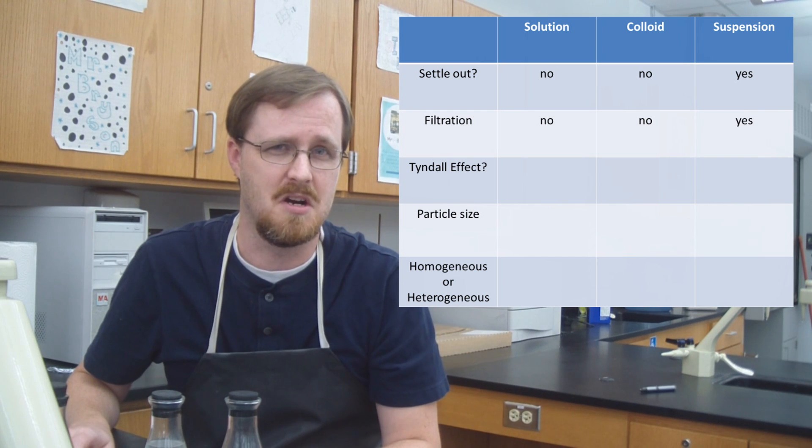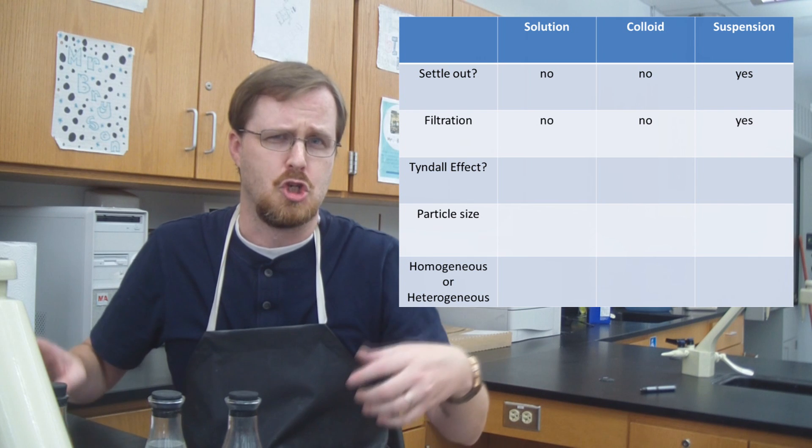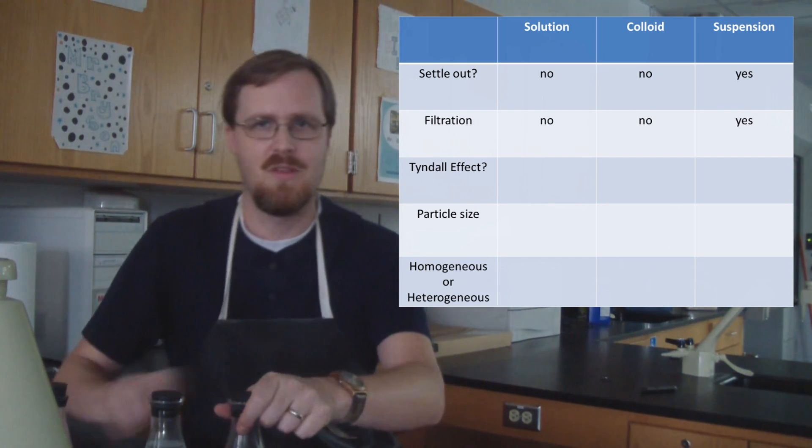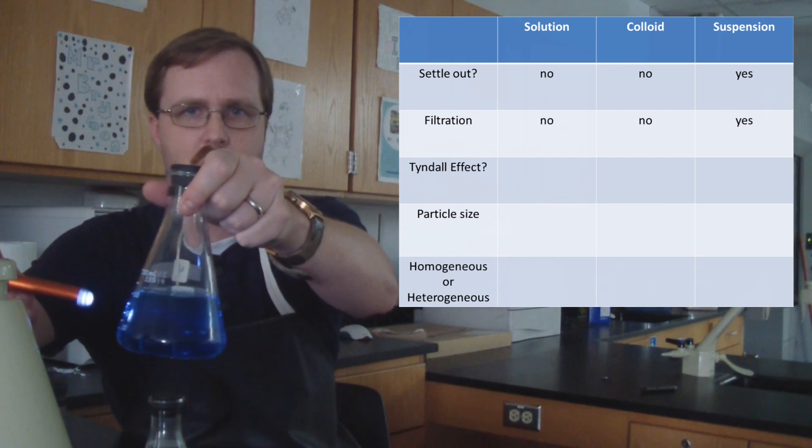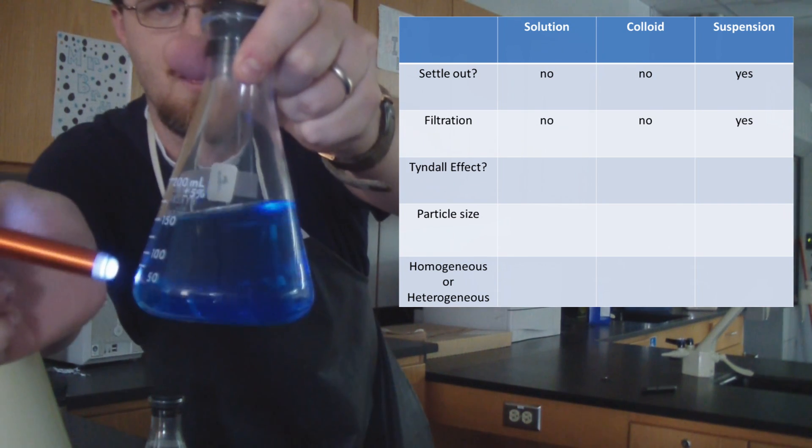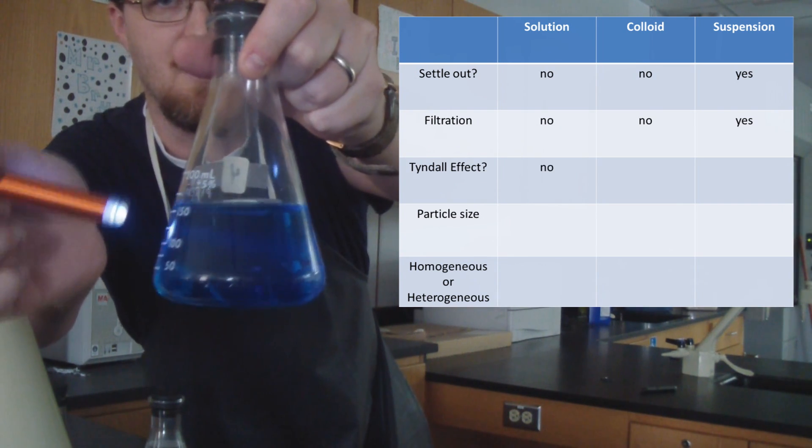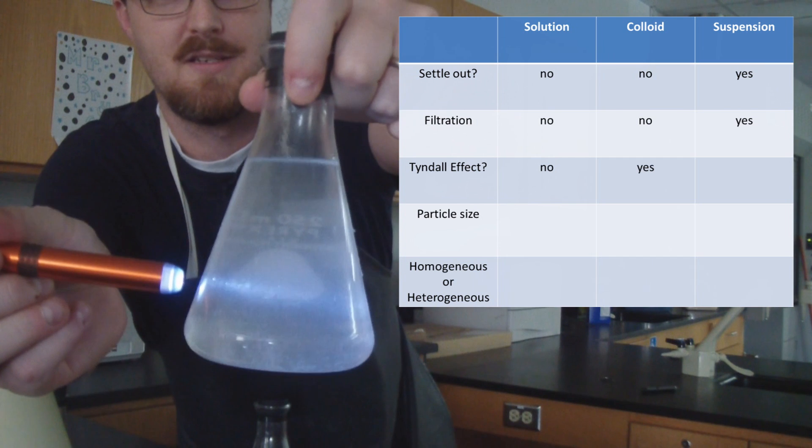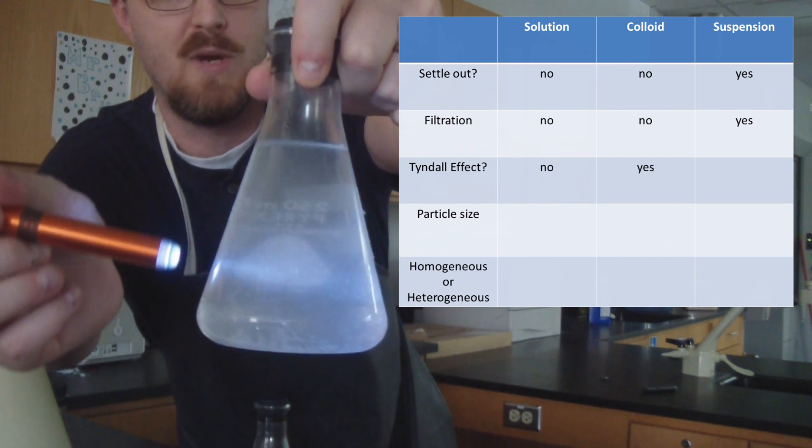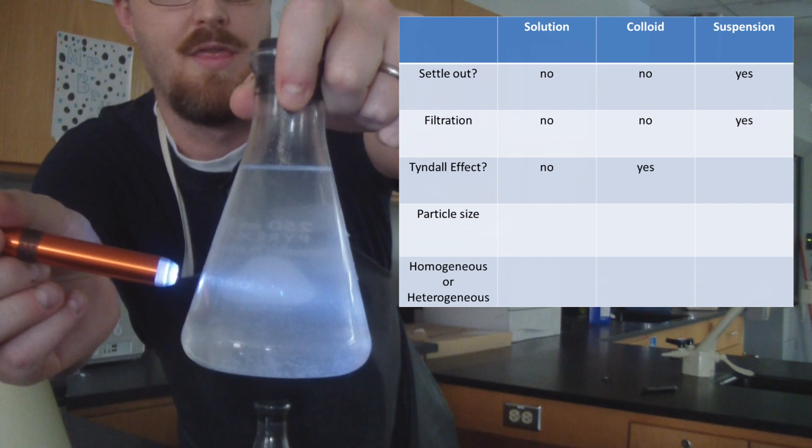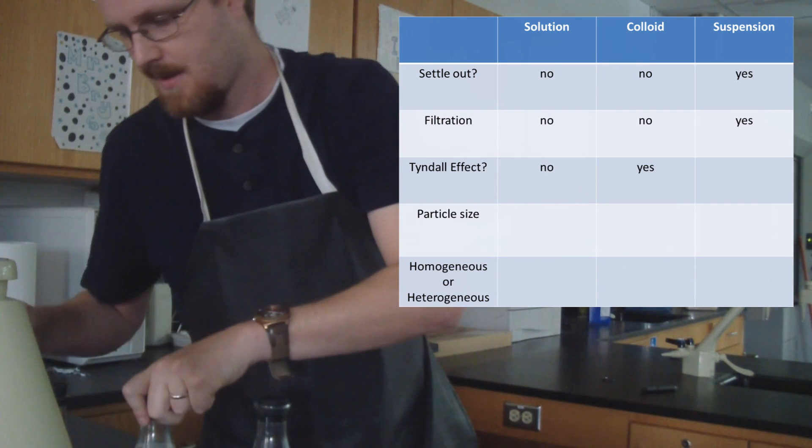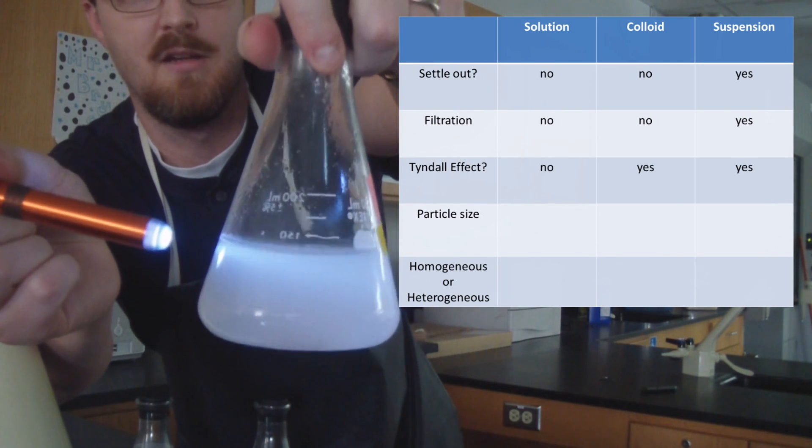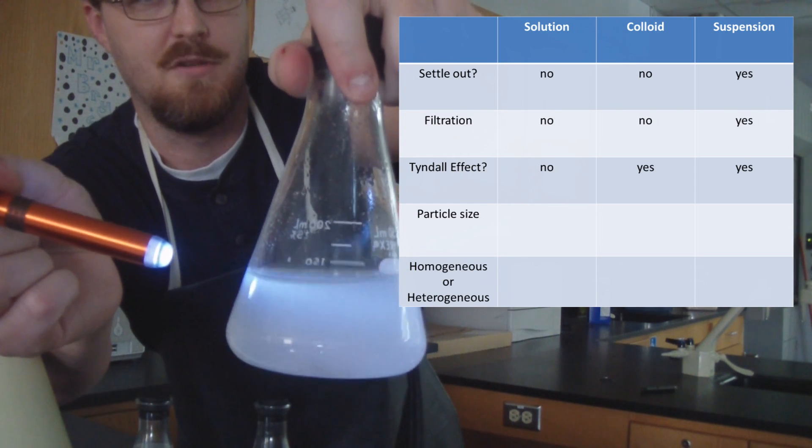Now, in order for us to see this a little better, I'm going to use my magic powers to turn off the lights. Ah, now that's much better. Alright. So let's start with our solution right here. So if I shine the light directly in, I'm going to get a little closer here, there is no beam of light that you can see in the middle of that. Let's check out our colloid. And whoa, look at that. There is the beam of light directly in the mixture there. That is the Tyndall effect. And for our suspension, let me shake it back up so it's all mixed up together. And you can definitely see that glow right there in the liquid. There's your Tyndall effect.